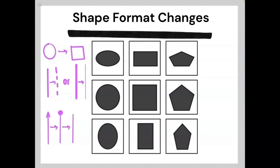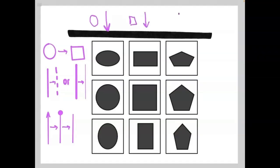In this example, all of the elements in each column are the same shape. In the first column, we have circles. In the middle column, we have squares, or rectangles. And in the third column, we have pentagons.